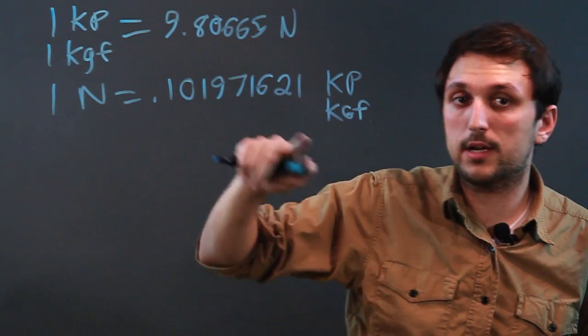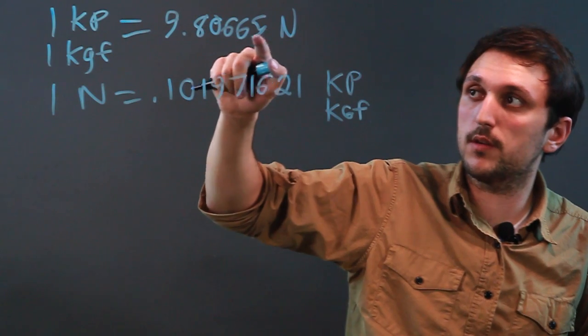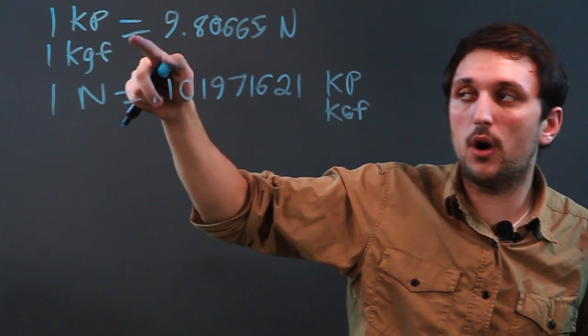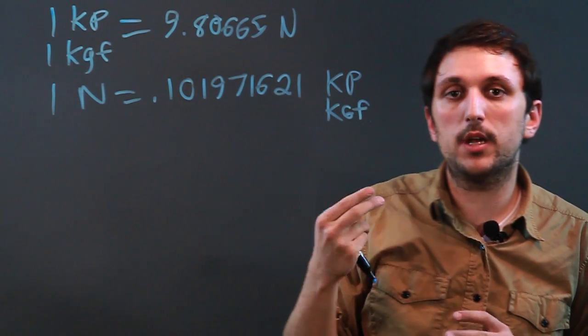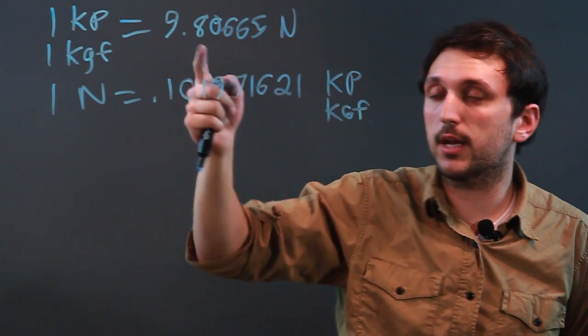So, just to go back over, one kilopond or one kilogram force equals 9.80665 newtons, as newtons and kilopounds are not a measurement of pure mass, they're a measurement of force, which is mass relative to gravity in meters per second.